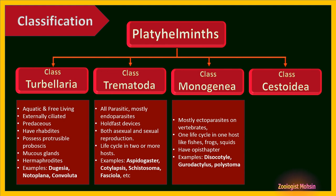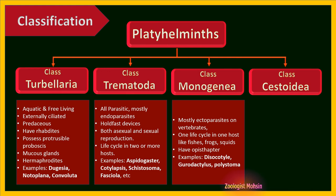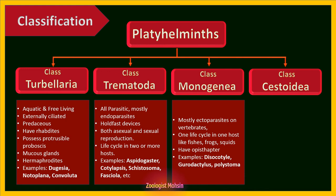Class Monogenea: mostly active parasites of vertebrates. They have one life cycle in one host, such as fishes, frogs, or squids. They have receptor organs. Examples include Discocotyle, Gyrodactylus, and Polystoma.